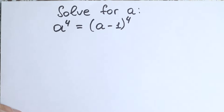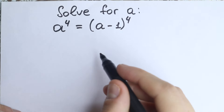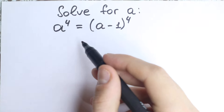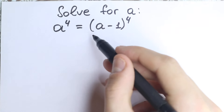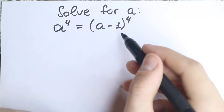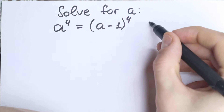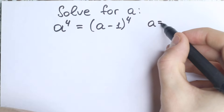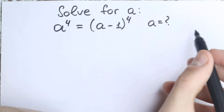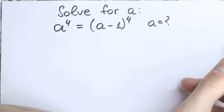Hello everyone! Welcome back to Higher Mathematics. In this video we're going to solve a really interesting equation. We have a to the fourth equal to a minus one to the fourth. On the first side this is a very easy equation, and a lot of students solve it easily and without any problems.